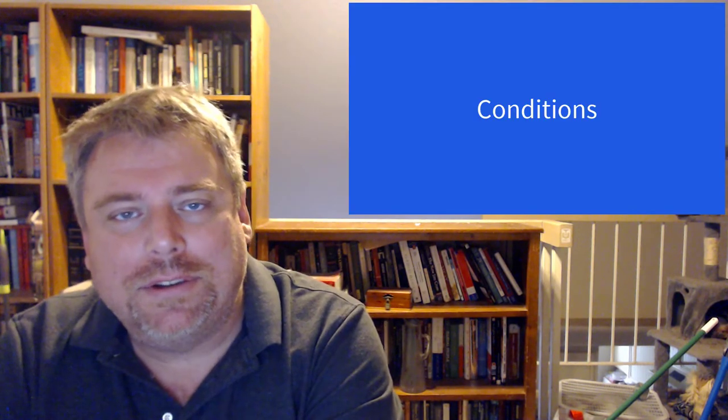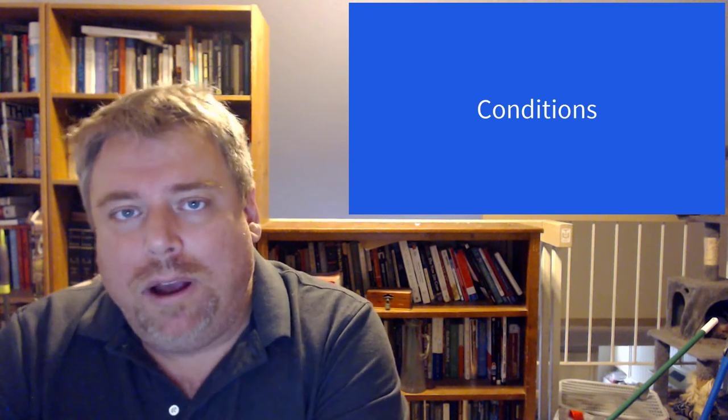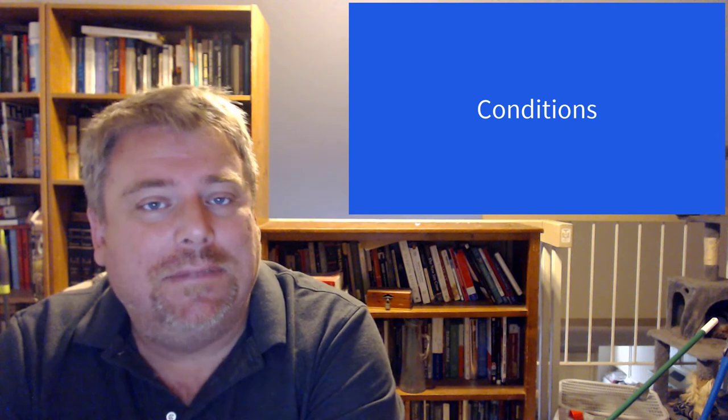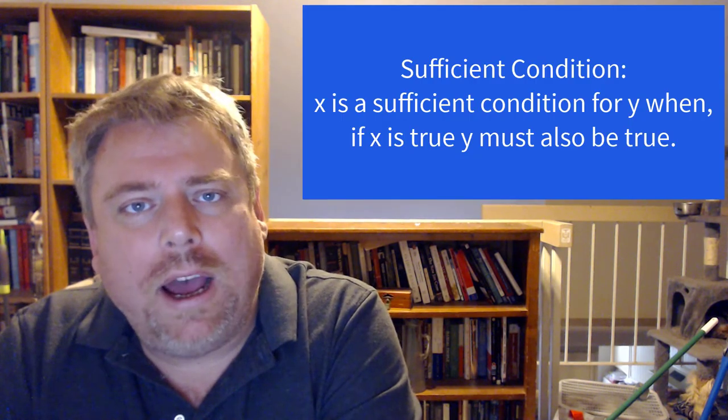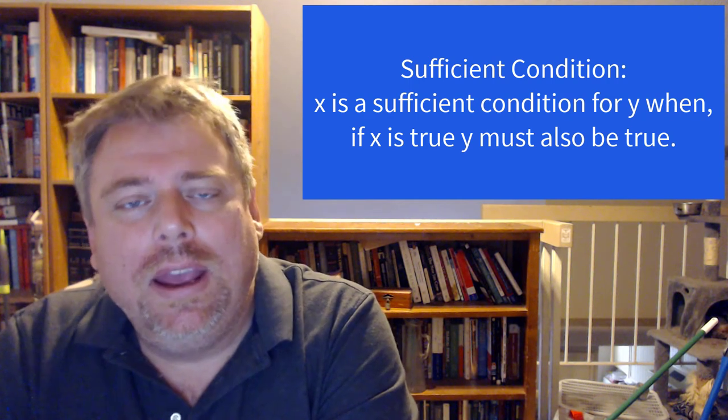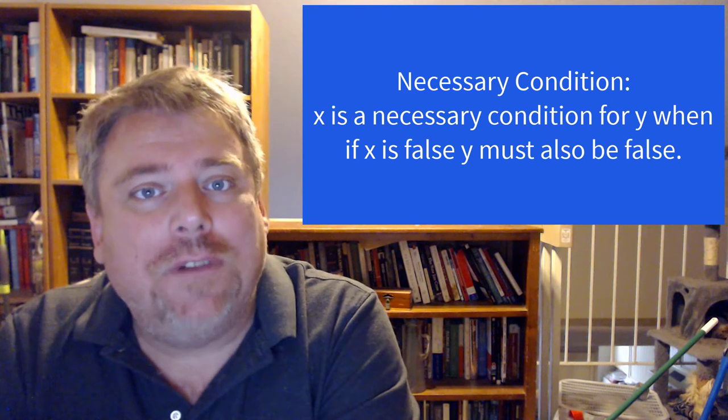We're going to come back to analytic, synthetic, and contradiction throughout the semester. Now let's talk about conditions — how do we know that if one thing is true, something else is true, or if one proposition is false, another is false? We look at conditions. A condition can be sufficient or necessary. Being at least 35 years of age is a condition for being President of the United States. X is a sufficient condition for Y when: if X is true, Y is true. X is a necessary condition for Y when: if X is false, Y is false.